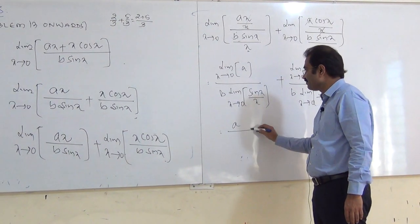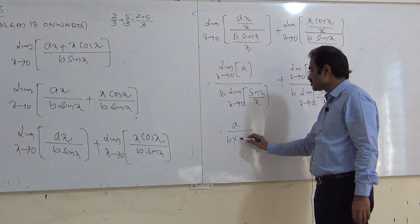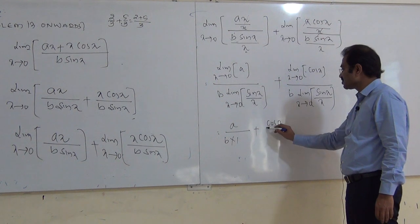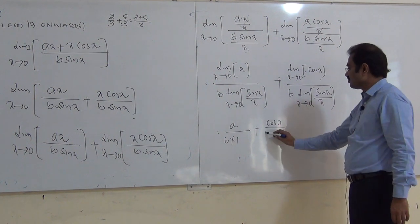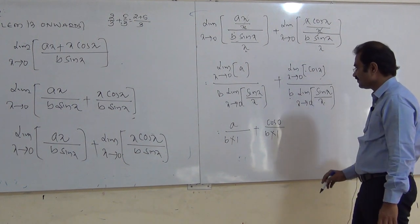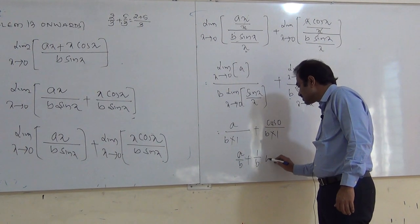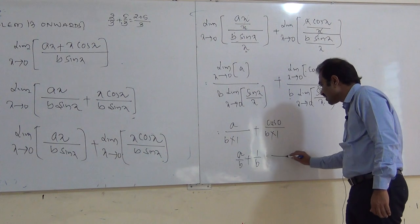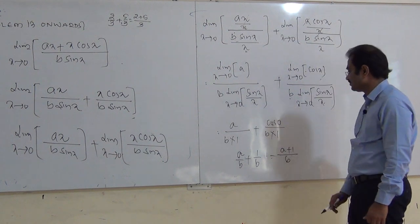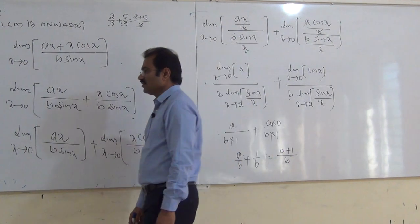For the first part: a / (b × 1) = a/b. For the second part: limit of cos x as x tends to 0 divided by b × limit of sin x/x as x tends to 0 = cos(0) / (b × 1) = 1/b. Therefore the total answer is a/b + 1/b.